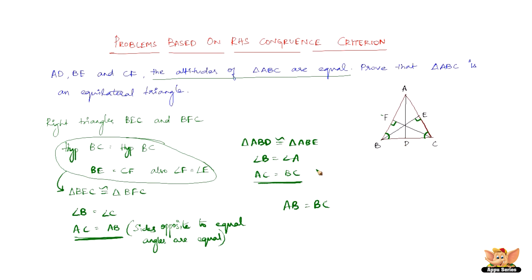Since AC equals AB and AC equals BC, then AB equals BC equals AC. Therefore, triangle ABC is an equilateral triangle.